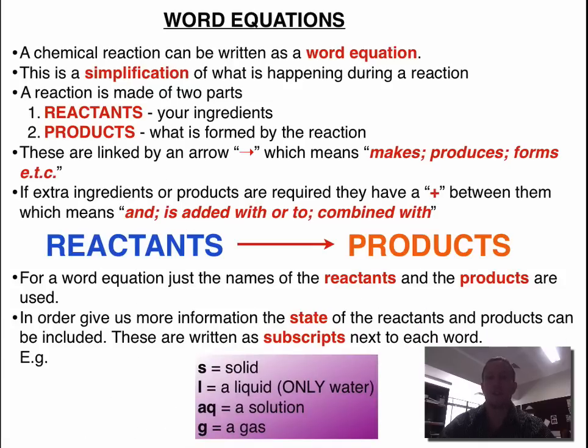The first state is symbolized with a little s. This means that the chemical was in a solid form. And L is a liquid, and this is only given to water. And AQ means aqueous, or a solution.